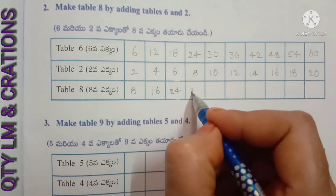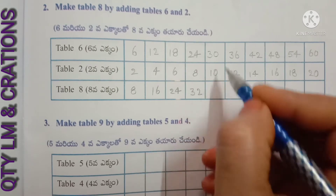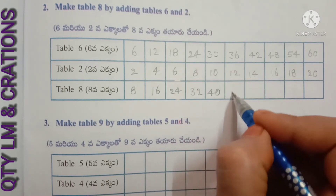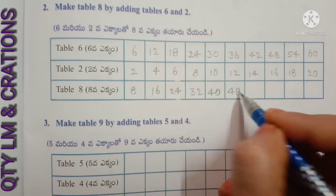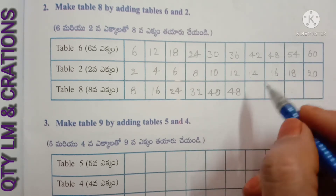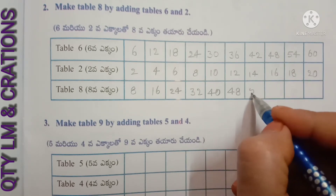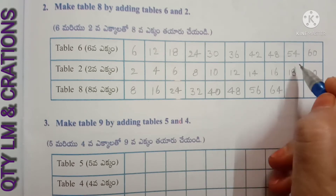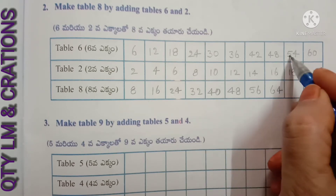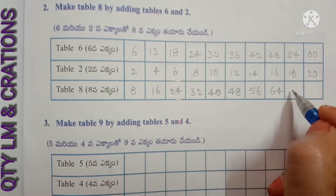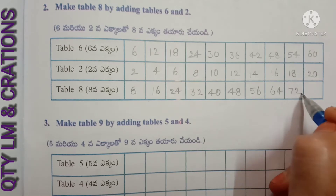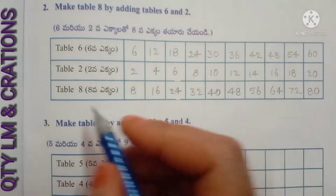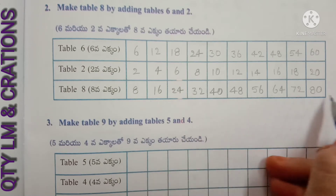Continuing: thirty plus ten gives forty, thirty-six plus twelve gives forty-eight, forty-two plus fourteen gives fifty-six, forty-eight plus sixteen gives sixty-four, fifty-four plus eighteen gives seventy-two, sixty plus twenty gives eighty. So here we have made the 8th table.